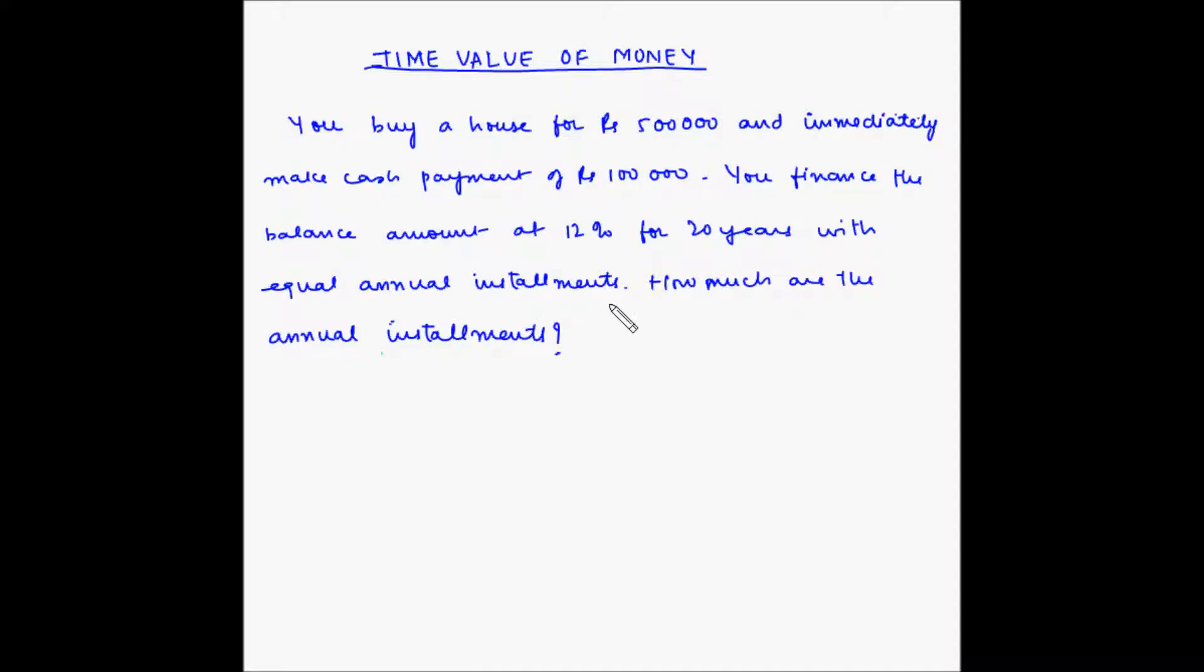How much are the annual installments? So basically you went to buy a house and you were told that the house costs ₹5 lakh. Now you decided that you can afford to pay one lakh rupees out of your pocket.